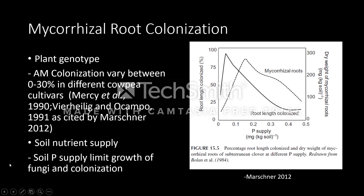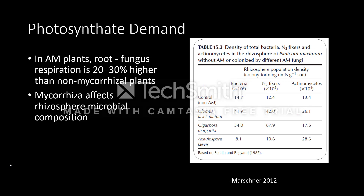AM colonization varies between different cowpea cultivars. Soil phosphorus limits colonization. In subterranean clovers, percent root length colonized by mycorrhiza increases as soil phosphorus reaches a certain point, and then decreases if soil P increases beyond this point. Respiration is 20-30% higher compared to non-mycorrhizal plants. Different AM fungi affect colony units of bacteria, N2 fixers, and actinomycetes in Panicum maximum, and P. maximum infected with AM fungi generally had an increase in rhizosphere population.